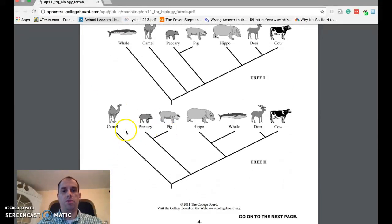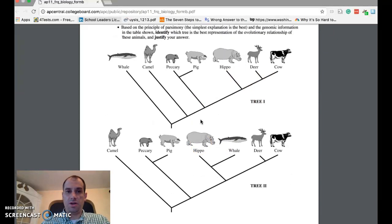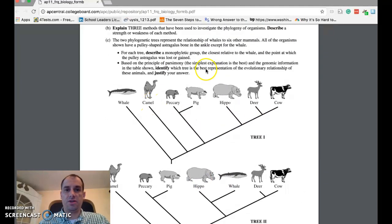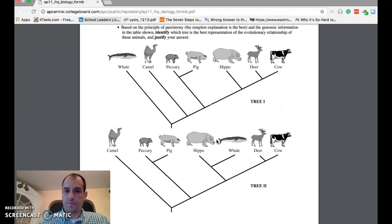In tree two, instead of the whale, we have the camel on the left, the cow on the right. There's no changes here. Deer and cow are still on the right. But the whale is now next to the hippo, very different from tree one. The question in part C is asking us, which tree is correct?